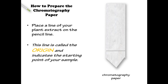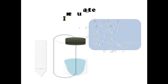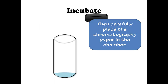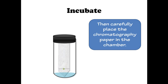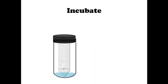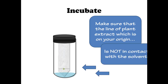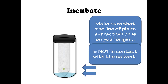Next, place a line of plant extract on the pencil line. This line is called the origin and indicates the starting point of your sample. Then carefully place the chromatography paper in the chamber, making sure that the line of plant extract at the origin is not in contact with the solvent.